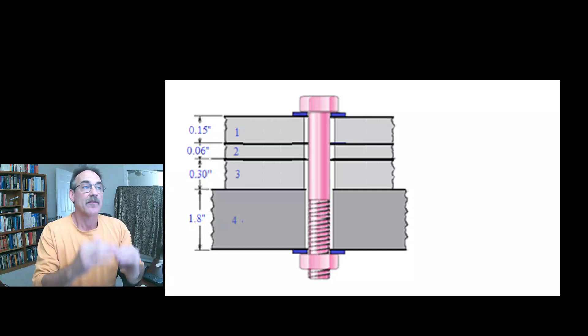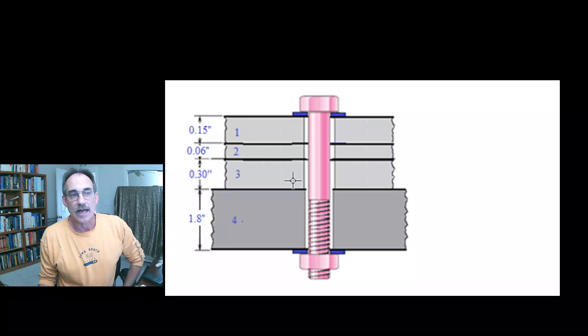Let's suppose we have four members bolted together with a preloaded bolt. We've got four members here with some typical kinds of thicknesses. What we're going to do is fan our load out from the edge of each washer at 45 degrees.